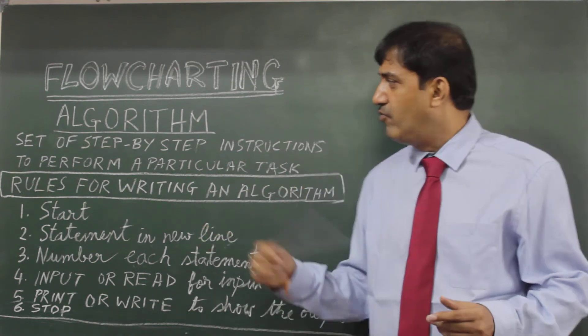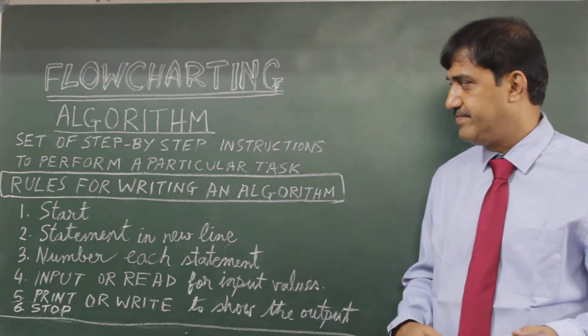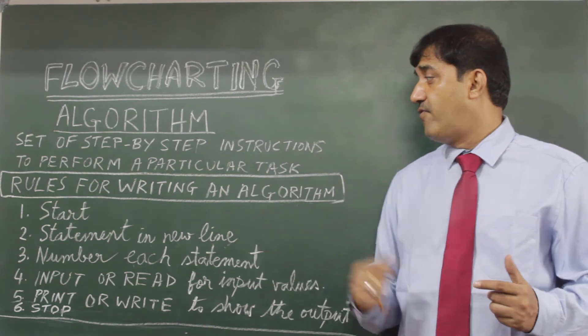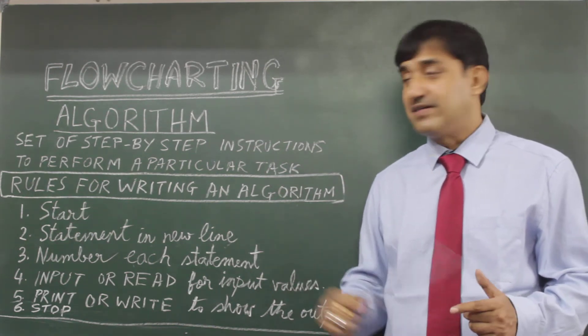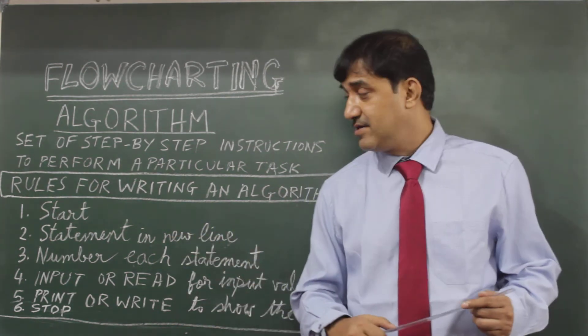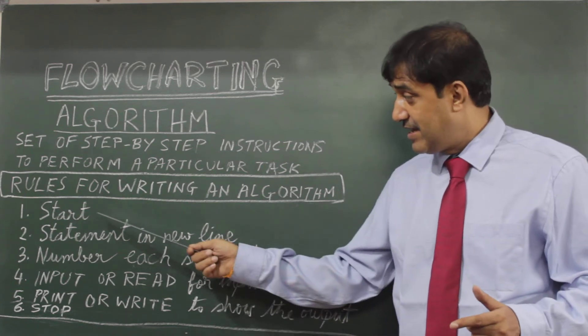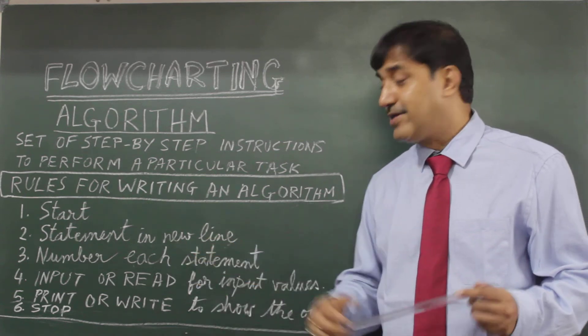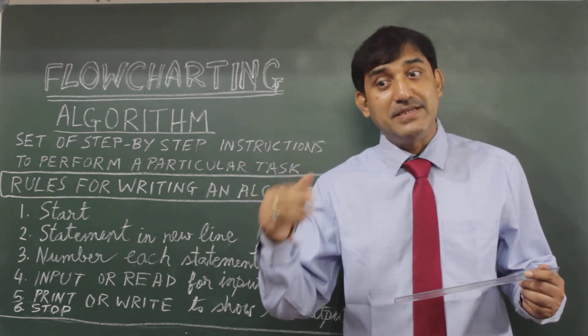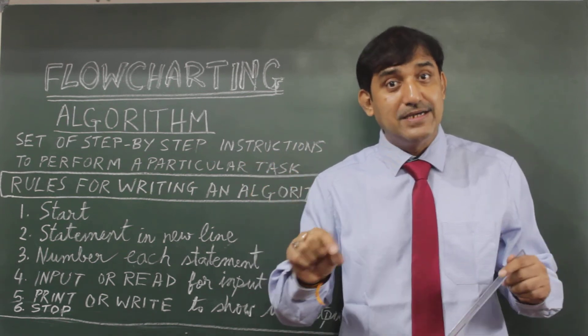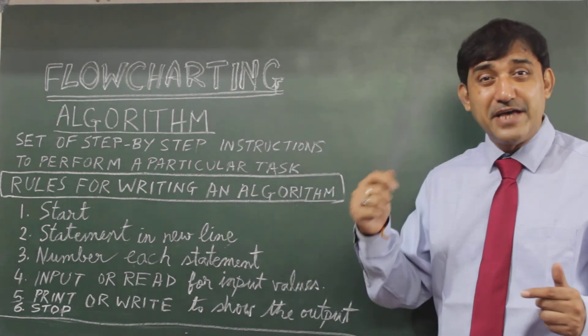There are certain rules for writing an algorithm. What are the rules? Firstly, you must start with the START statement. Next, each statement will be in a new line. That means each statement will be separately written. There must be numbering of the particular lines.